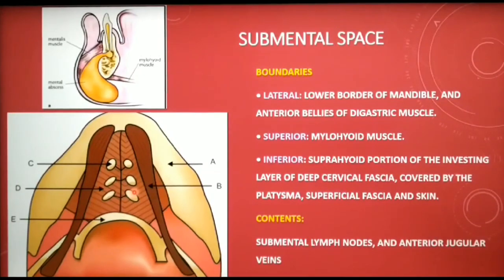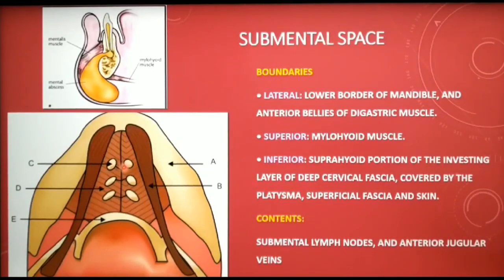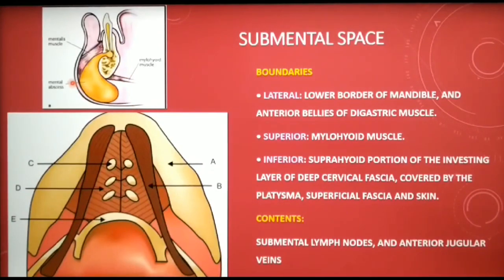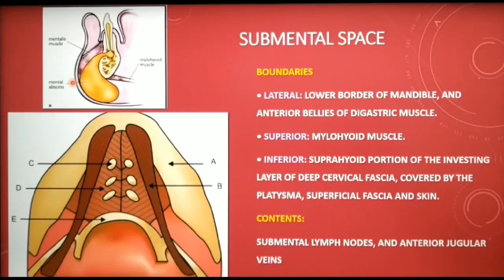Viewing the submental space from below: it is bounded laterally by the lower border of mandible and anterior bellies of the digastric muscle. Superiorly is the mylohyoid muscle, which forms the floor of the mouth. Inferiorly is the investing layer of deep cervical fascia. The submental space contains submental lymph nodes and anterior jugular veins.